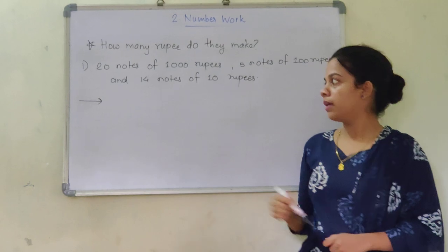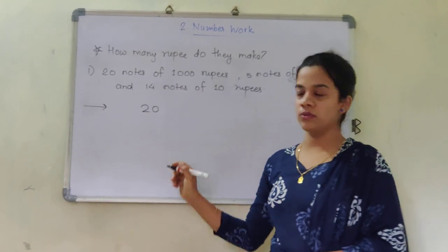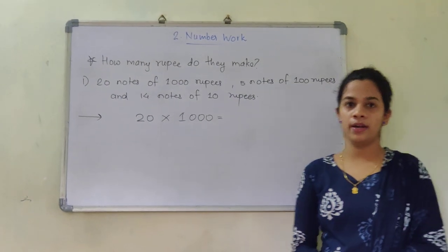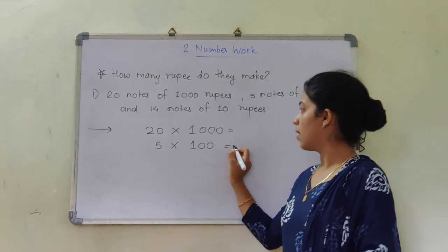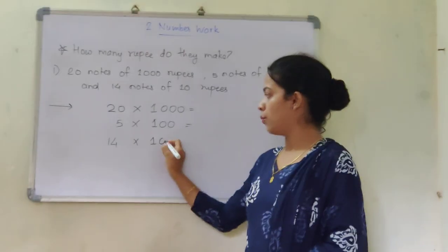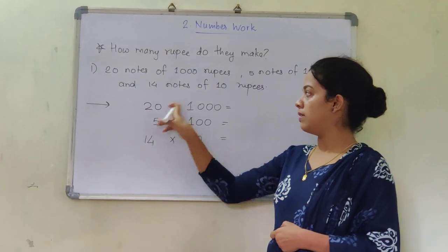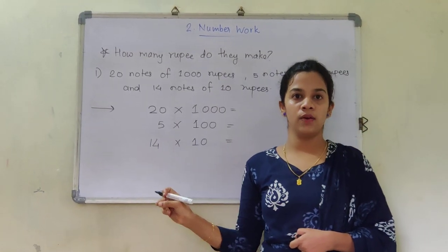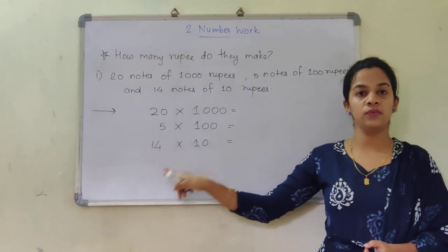So: 20 notes of 1,000 rupees, 5 notes of 100 rupees, and 14 notes of 10 rupees. You are familiar with these notes. Now we will see how to solve it. 20 notes of 1,000 rupees means 20 into 1,000. 5 notes of 100 rupees means 5 into 100. 14 notes of 10 rupees means 14 into 10. We will see the calculation.